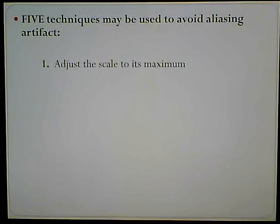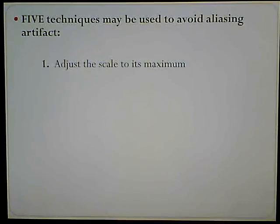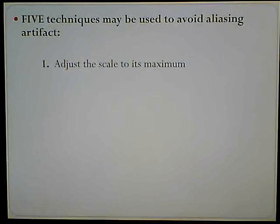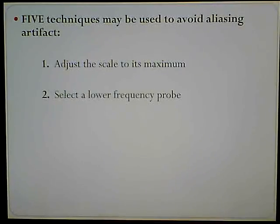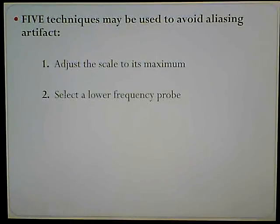Number one: adjust the scale to its maximum. That only makes sense — of course we're going to set the speed limit higher, so that we can fit that waveform within the Nyquist limit or that speed limit. That is the scale. Number two: select a lower frequency probe, because lower frequency transducers are less likely to aliase.